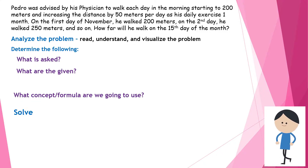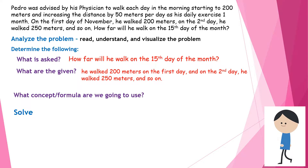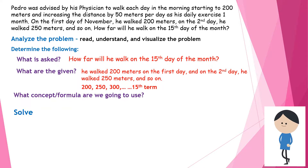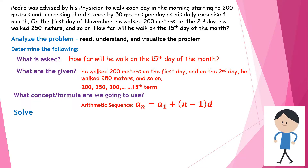After analyzing the problem, we find what is asked: how far will he walk on the 15th day. The given values are that Pedro walked 200 meters on the first day and 250 meters on the second day, forming an arithmetic sequence: 200, 250, 300... We are asked to find the 15th term, so we'll use the arithmetic sequence formula: a sub n equals a sub 1 plus n minus 1 times d.